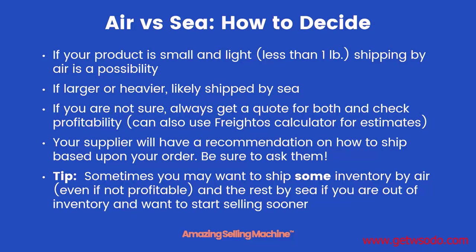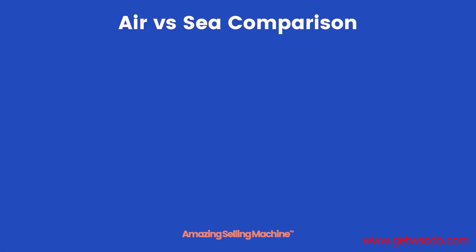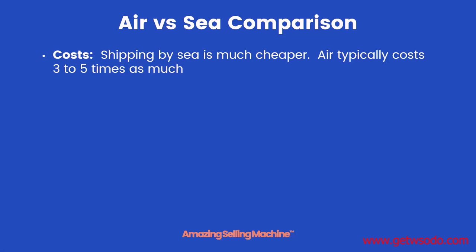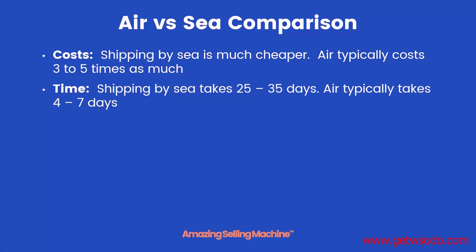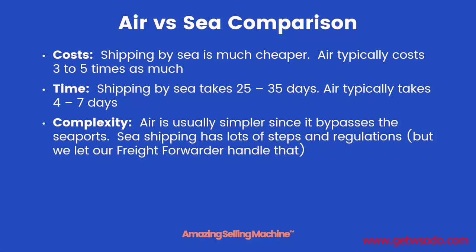Sometimes you may want to do both — ship some of your material by air, even if you're not making money on that portion, and the rest by sea. You can do this when you want to start selling sooner and don't want to wait for an ocean shipment. The main differences come down to cost, time, and complexity. Shipping by sea is much cheaper; air typically costs three to five times as much. Sea shipping takes 25 to 35 days while air typically takes less than a week. Air is also much simpler since it doesn't have to go through seaport regulations.